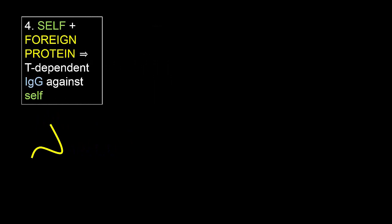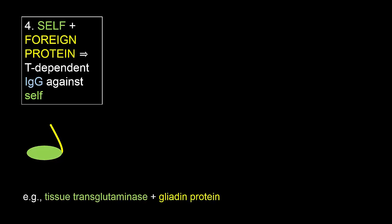We start with the premise that anti-self B cells can exist, because without T cell help they would make at best low-affinity anti-self IgM. Anti-self follicular helper T cells are rare because of effective thymic negative selection. We also suggest that sometimes self proteins may attach to foreign proteins in a stable way — an example is intestinal enzyme tissue transglutaminase II, which acts on grain-derived gluten proteins and sometimes gets stuck to them.